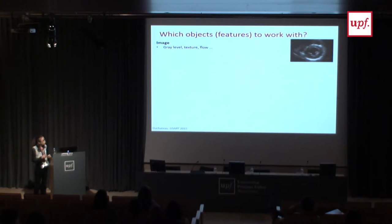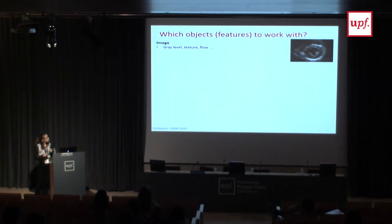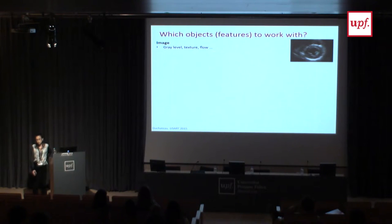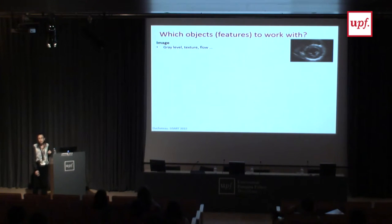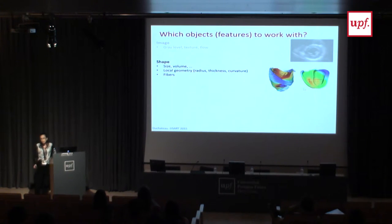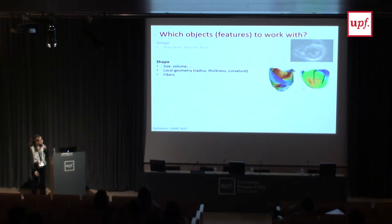We have now seen how to define the learning task — the task, the experience, and the performance measure. Another important issue is the data and how to represent it. For cardiac applications, we could work with images using pixel intensities or texture, with shape using global parameters like volume or local measures like regional thickness or curvature, or even meshes and fibers. We can also work with motion, velocity, deformations, and other clinical data such as age, sex, or smoking status.